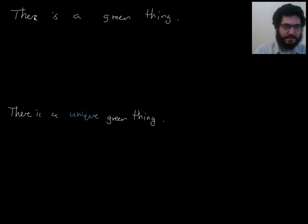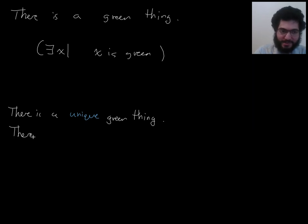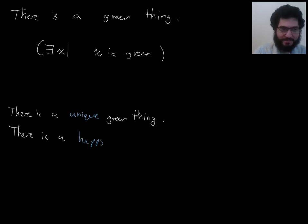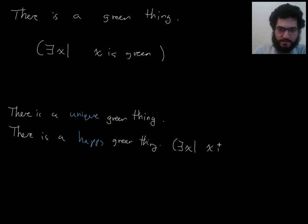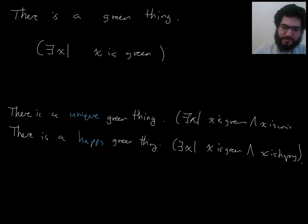Let's practice a little bit with this idea. How would you say the statement 'there is a green thing'? You would say there is an X such that X is green. How would you say 'there is a unique green thing'? How would you say 'there is a happy green thing'? To say there is a happy green thing, you would say there is an X such that X is green and X is happy. So, you might think that the way to say 'there is a unique green thing' is to say there is an X such that X is green and X is unique.